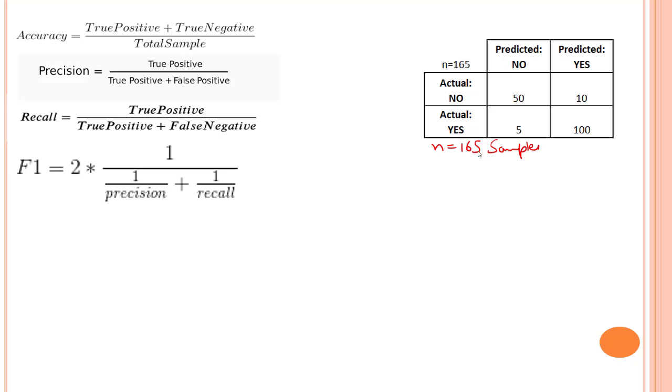Now, before we end this section, let's take an example of a confusion matrix of 165 samples. So we have 165 samples, and from these 165 samples, we have created this confusion matrix. We will manually try to find out the accuracy, precision, recall, and F1 score.